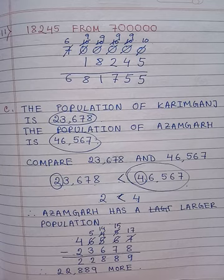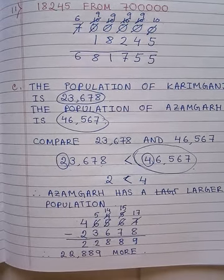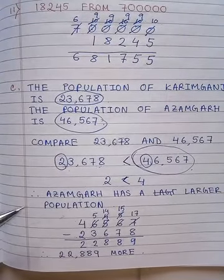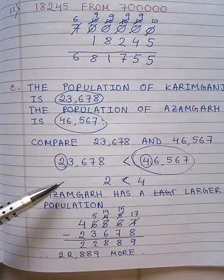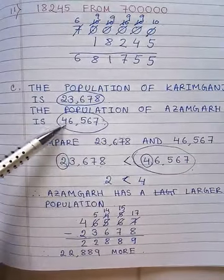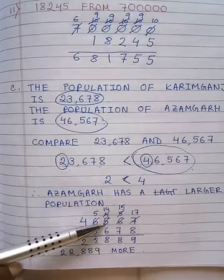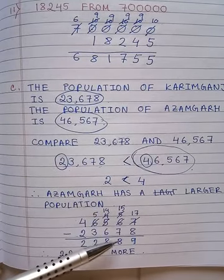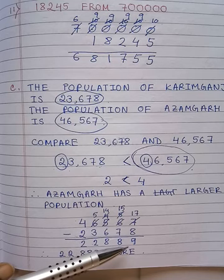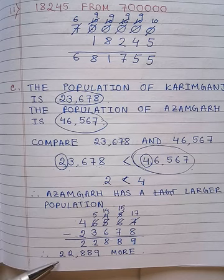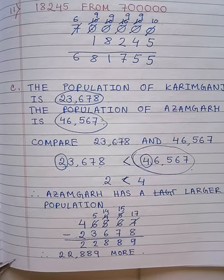Next part is 'how much more?' How much more means you have to find the difference between the populations of these two places. 46,567 is the larger number, so write it down first, then 23,678. Subtract these two numbers. The answer is 22,889 more. Write down the answer.